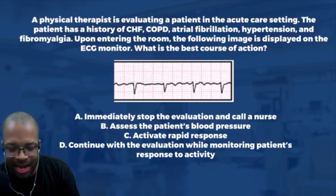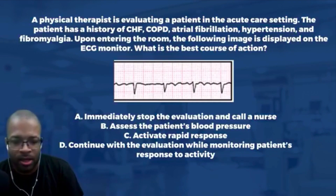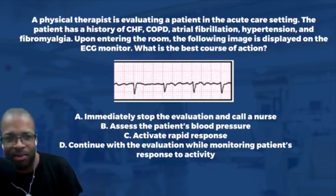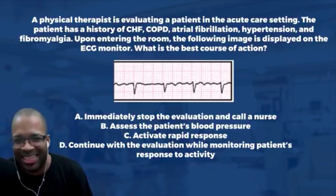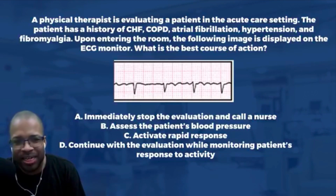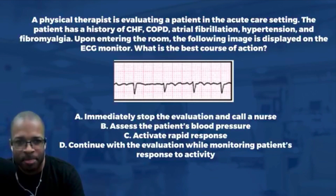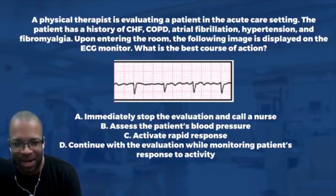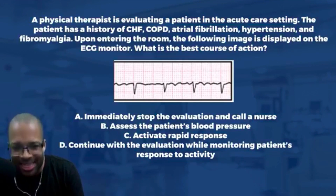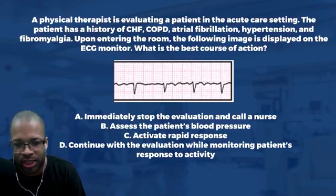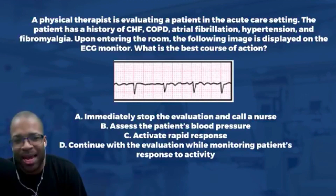Let's go ahead and knock this one out. We have a physical therapist here — let's call him Nate. Nate is evaluating a patient in the acute care setting. The patient has a history of CHF, COPD, atrial fibrillation, hypertension, and fibromyalgia. Upon entering the room, the following image is displayed on the ECG monitor. What is the best course of action? Options are: A) immediately stop the evaluation and call the nurse, B) assess the patient's blood pressure, C) activate the rapid response, or D) continue with the evaluation while monitoring the patient's response to activity.